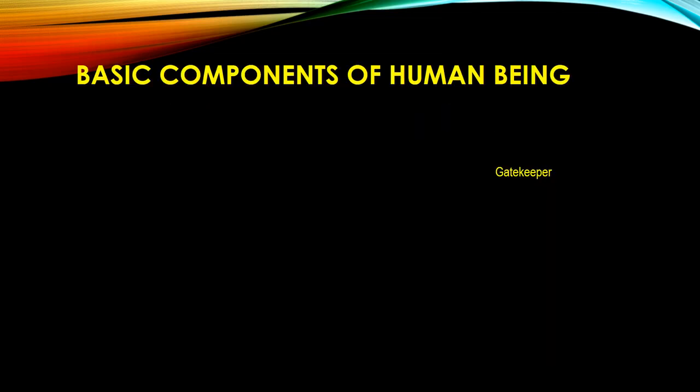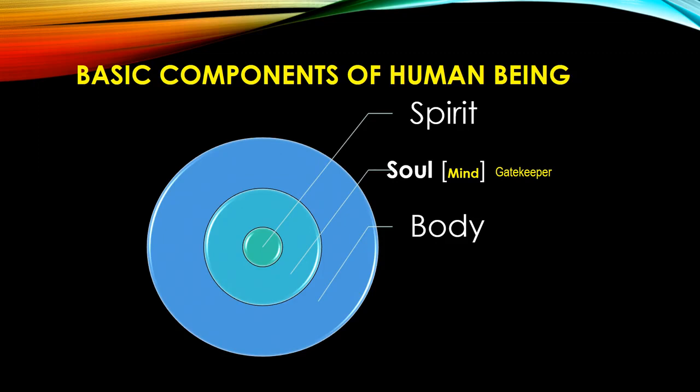So what are the basic components of human beings? This is very important for a good understanding of psychology. Basically, mankind is made up of three major parts: we are made up of the body, which we are very conscious of — it's physical, real, and tangible. Next to that is the soul within, which incorporates the mind. And then we have the spirit.